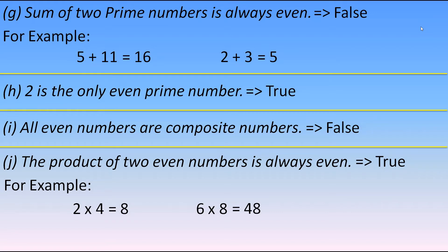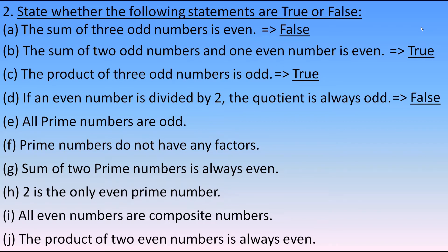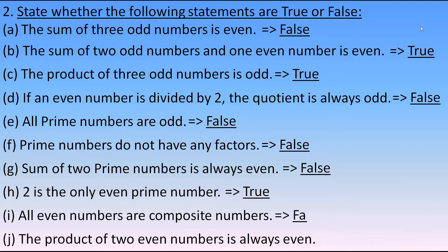Now let's write all the true/false answers: The sum of three odd numbers is even — False. The sum of two odd numbers and one even number is even — True. The product of three odd numbers is odd — True. If an even number is divided by 2, the quotient is always odd — False. All prime numbers are odd — False. Prime numbers do not have any factor — False. Sum of two prime numbers is always even — False. Two is the only even prime number — True. All even numbers are composite numbers — False. The product of two even numbers is always even — True.